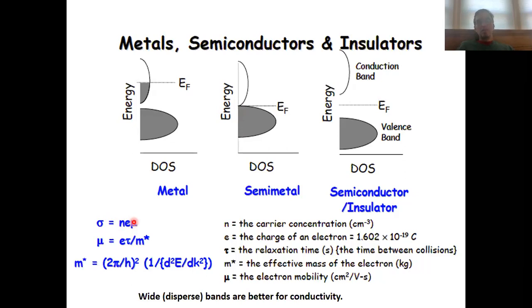We then looked at the electron mobility in more detail and we have seen that the electron mobility is the charge of the electron times the relaxation time tau over the effective mass, whereby the relaxation time measures the time between collisions between the electron and the lattice.